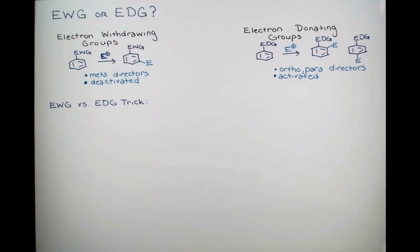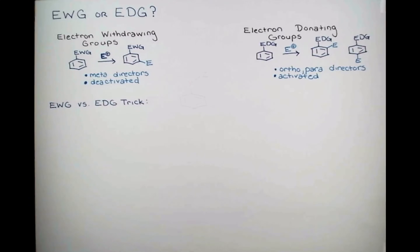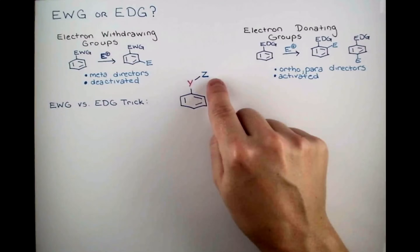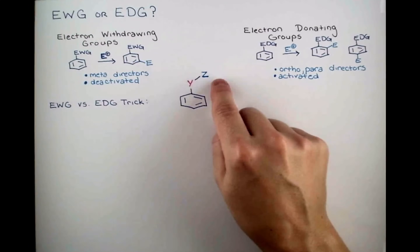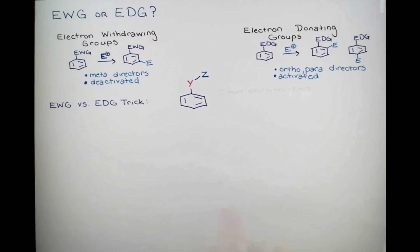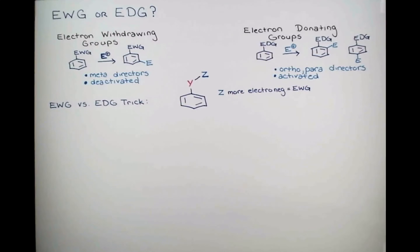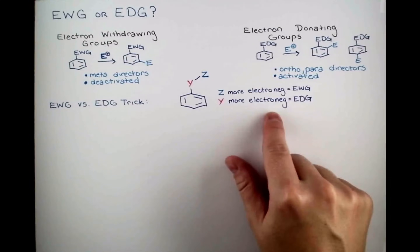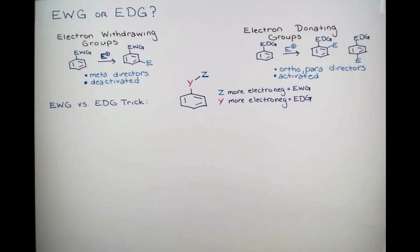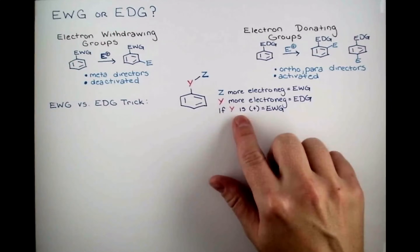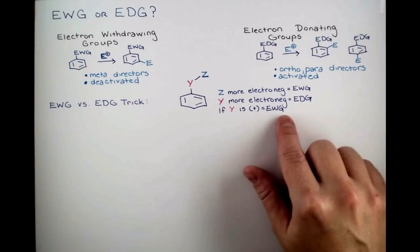Now let's get into our trick to figure out if we have a donating or withdrawing group. Say we have a substituted aromatic ring — we have groups bonded to it. Y is directly bonded to the ring, and Z is directly bonded to Y. If Z is more electronegative than Y, this is an electron withdrawing group. And if Y is the more electronegative element, then it's an electron donating group. Now this trick is going to work for most groups that we'll see substituting aromatic rings, but we need to add one more caveat: if Y has a formal positive charge, then this is also an electron withdrawing group.